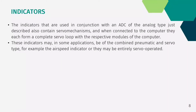The indicators used in conjunction with the ADC of the analog type also contain servo mechanisms, and when connected to the computer, they each form a complete servo loop with the respective modules of the computer. These indicators may, in some applications, be of the combined pneumatic and servo type — for example, the airspeed indicator — or they might be entirely servo-operated.